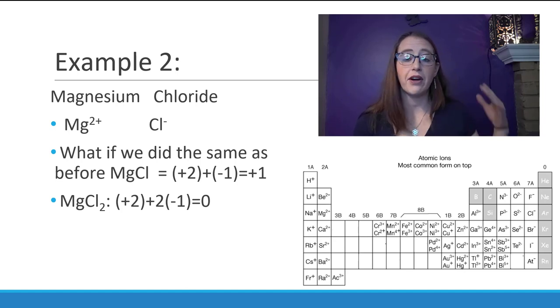Instead we actually need to have two chlorides to balance the charges. This would give us MgCl2. The two goes as a subscript on the chlorine to tell us that for every magnesium there must be two chlorines to balance it. This gives us one plus two charge and then two negative one charges for a total of zero. So it's MgCl2.